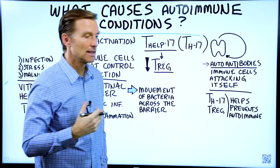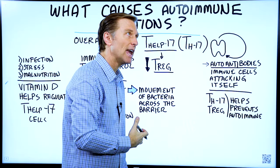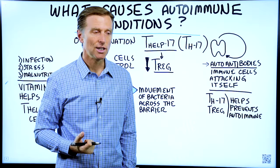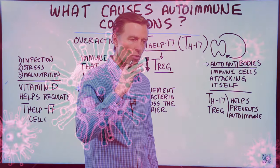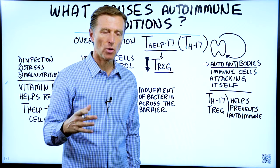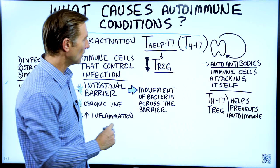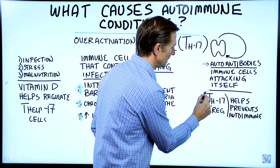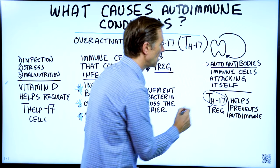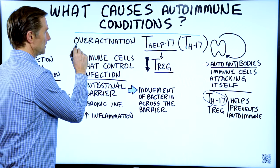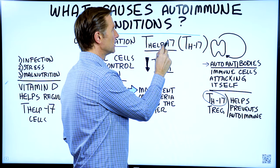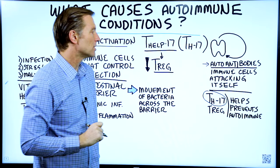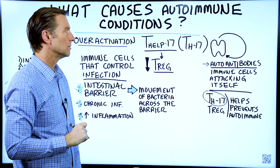You can have these autoantibodies to pretty much any tissue in your body. You can have them to receptors of cells — these immune cells can attack pretty much any tissue of the body. What an autoimmune condition boils down to is this one cell called the Th17 cell becoming overactive. Excessive amounts of the T helper cell 17 are responsible for autoimmune conditions.